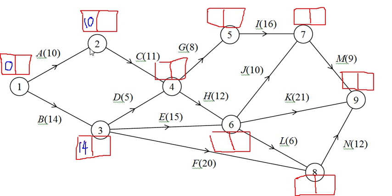Now into four. The earliest time we can be at four means basically what's the earliest time we could have finished everything feeding into four - so what's the earliest time we could have finished both C and D? We could have finished C at twenty-one and D at nineteen. So the earliest time we're actually at four, ready to move on, is twenty-one. We've got to finish both C and D. For five it's quite easy once we've got that - it's twenty-nine.